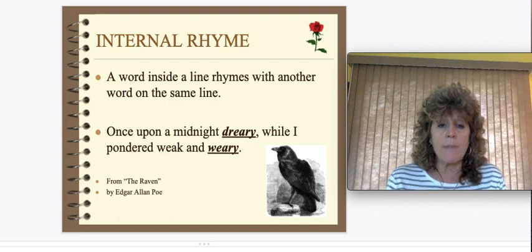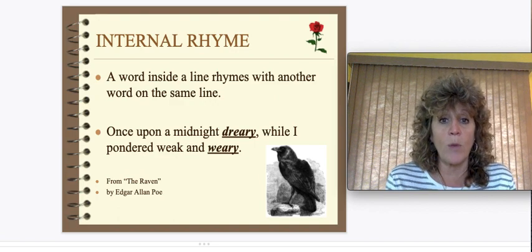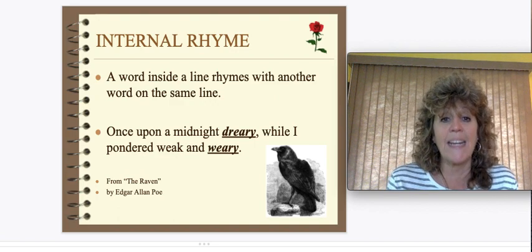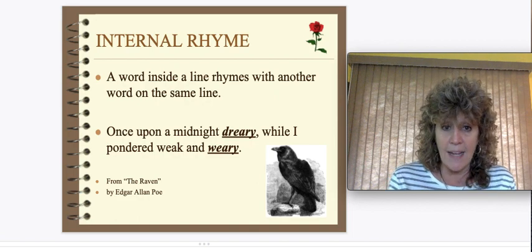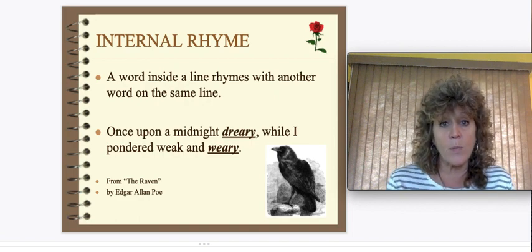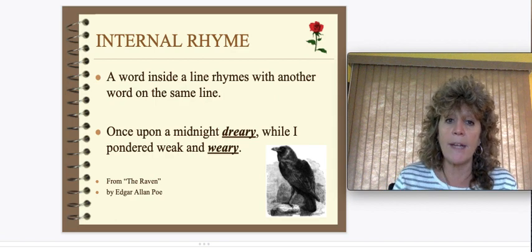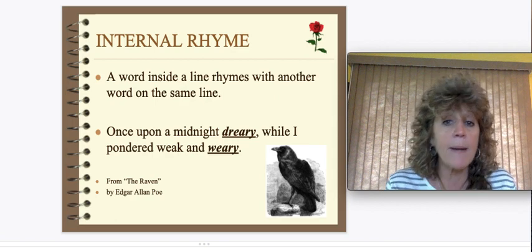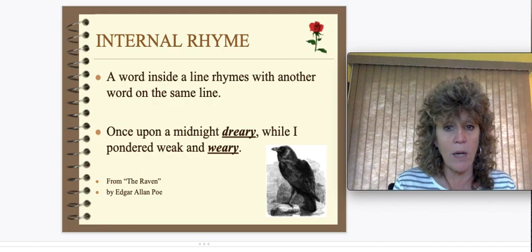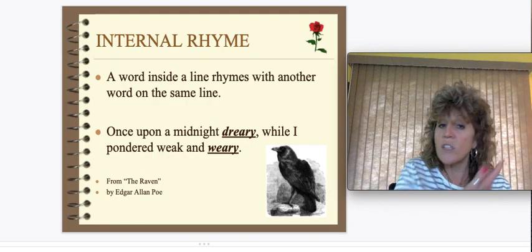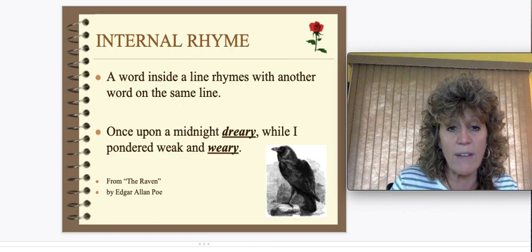Internal rhyme is when the rhyme is inside the lines of the poem — not necessarily at the end. It's when a word in a line rhymes with another word in the same line. Here's an example: "Once upon a midnight dreary, while I pondered weak and weary." That's an example of internal rhyme — it's from "The Raven."